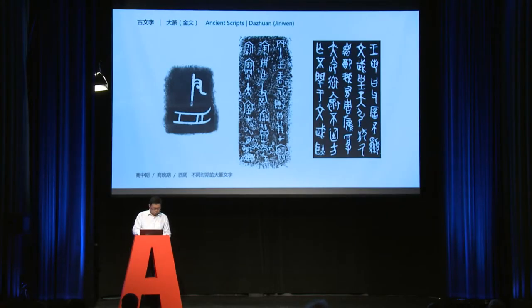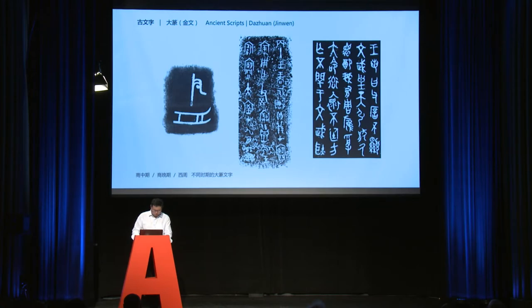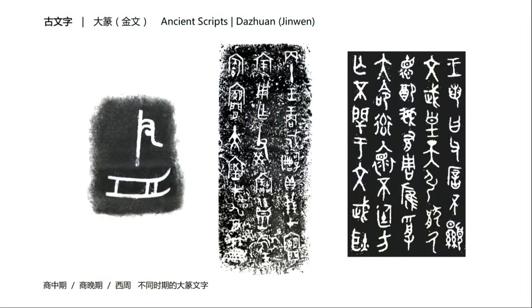There are three pictures from different time periods: the middle Shang dynasty, the later Shang dynasty, and the Western Zhou. We can see the progress from symbolic patterns to a more structured writing system.